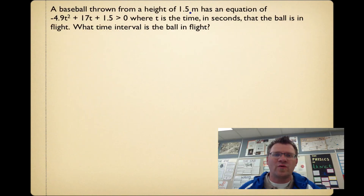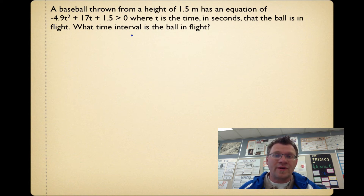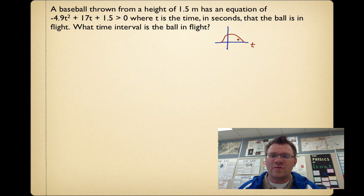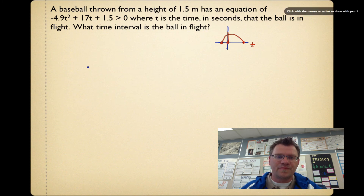Our last example: a baseball thrown from a height of 1.5 meters has the equation negative 4.9t squared plus 17t plus 1.5 is greater than or equal to 0, where t is the time in seconds the ball is in flight. We're looking for the time interval the ball is in the air. Because it's a negative parabola, it opens downward. Time can't be negative, so we're looking from the y-axis (where time starts) to where the ball lands.